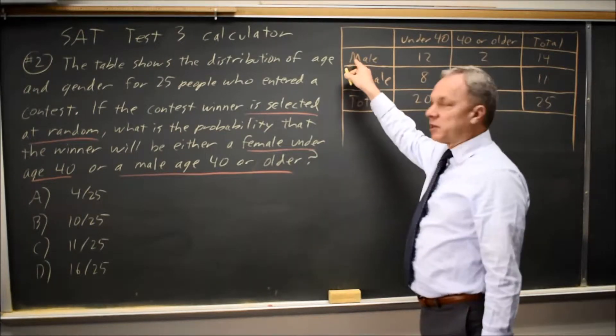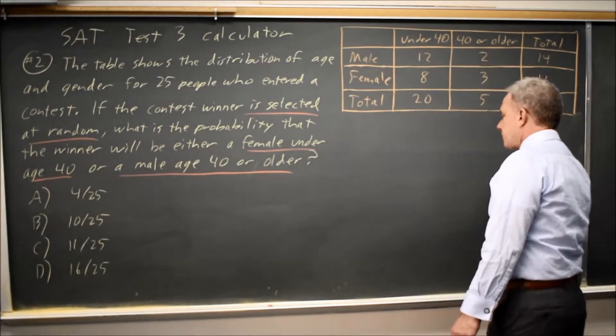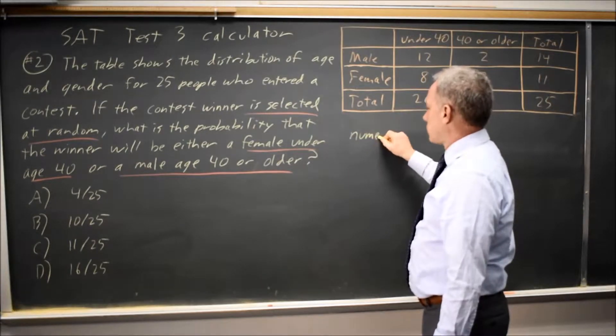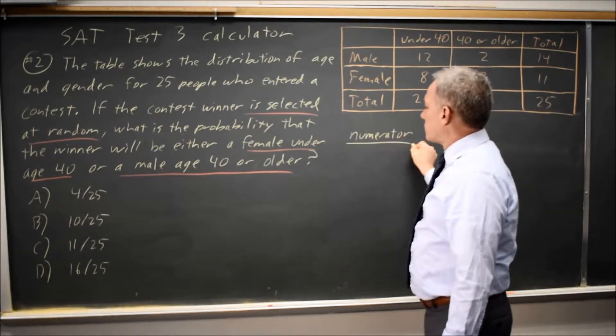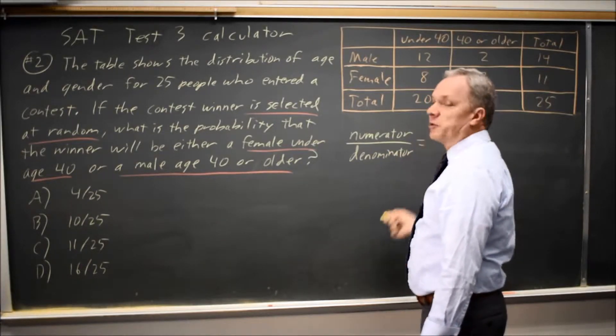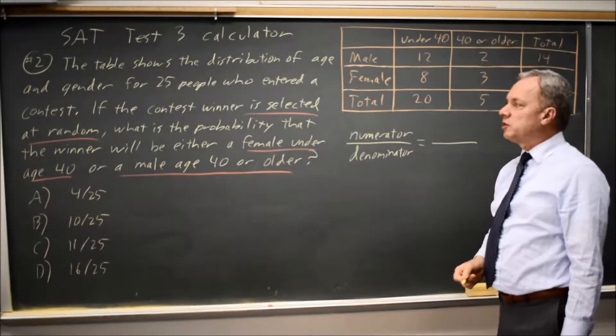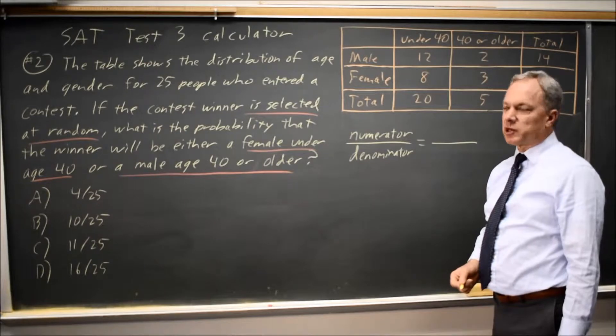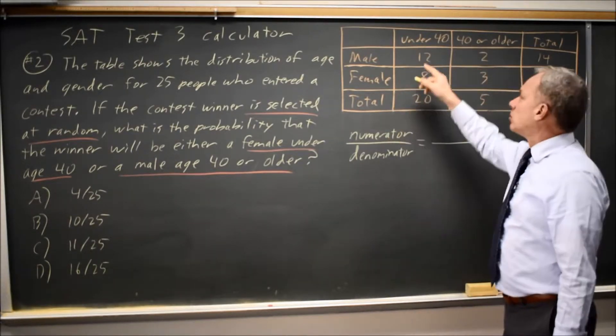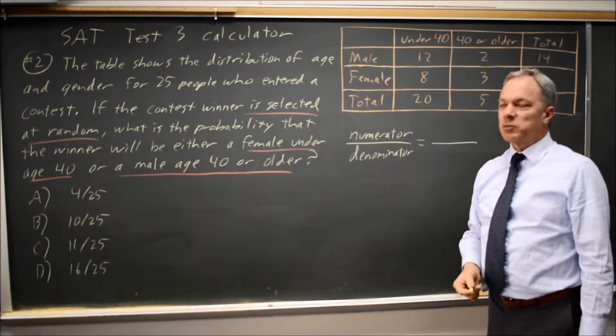In these problems where you have a table with two categorical variables, I like to write my probability as a fraction numerator over denominator, and that helps me to organize my thoughts. My denominator is always the number of individuals who could be chosen as described by the words of the problem, and College Board may ask for one or more columns or one or more rows, or they may ask for the entire table.